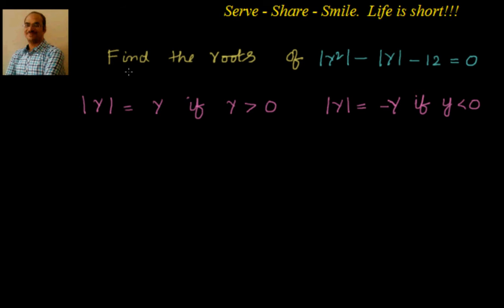First, let's understand what the absolute value of a variable means. The absolute value of y equals y if y is greater than 0 — we take the positive value. If y is negative, we take the positive value by writing minus of y, since y is already negative, making it positive. So absolute value of a variable will always return a positive value.